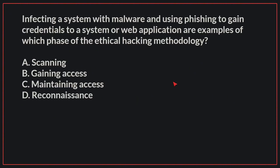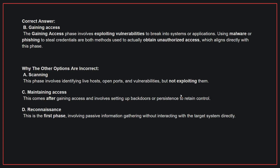Infecting a system with malware and using phishing to gain credentials to a system or web application are examples of which phase of the ethical hacking methodology? The correct answer is B: Gaining access. The gaining access phase involves exploiting vulnerabilities to break into systems or applications. Using malware or phishing to steal credentials are both methods used to actually obtain unauthorized access, which aligns directly with this phase.